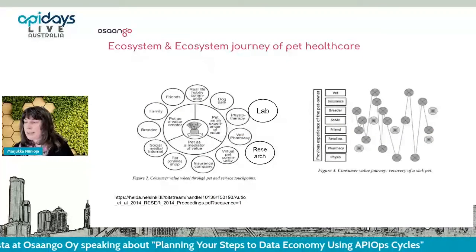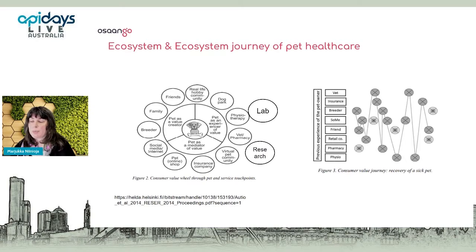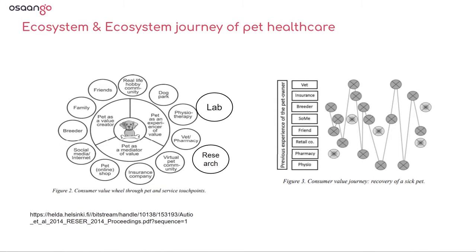This happens in a lot of ecosystems and ecosystem journeys. Here is one research example on a sick pet ecosystem. The main problem in the pet industry is that data is really scattered and there are lots of parties involved. In many countries, there is no legislation to force anyone to really share pet-related health data. So in this case, the data is hard to get and therefore more valuable — it's the core thing for making a successful business if you can overcome those hardships and get the valuable data into the right hands at the right time.